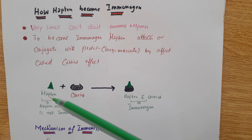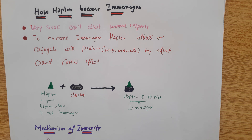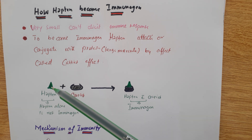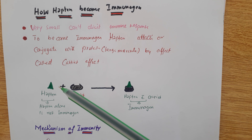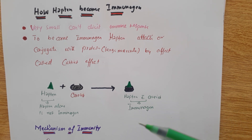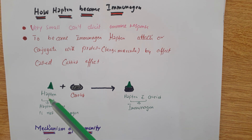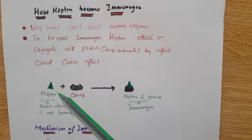The most common example for haptens are viruses. Sometimes we are infected with a virus and our body doesn't produce signs and symptoms. Why? Because viruses are haptens and cannot stimulate our immune response. But after a long time, if the virus stays in our body, it is a hapten and sometimes it binds with a carrier protein, and after that it stimulates the immune response — then we produce signs and symptoms.